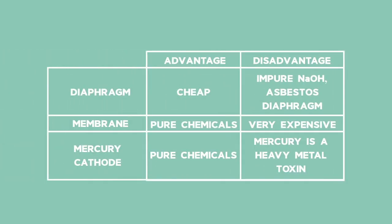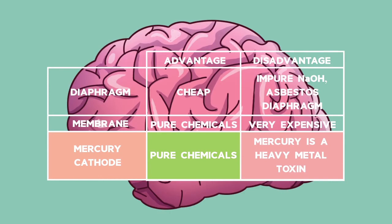The reasons for using the different cells are in the table here. Diaphragm cells are cheap but make impure sodium hydroxide and are often made by using asbestos, which is very harmful to lungs. Membrane cells make the purest product but are very expensive. The mercury cathode cells also make very pure products, but they use a lot more electricity and also use mercury, which is a very toxic element and causes brain and nerve damage.